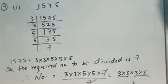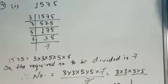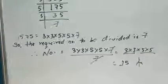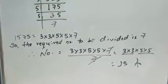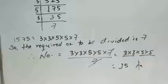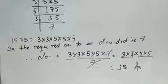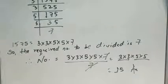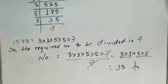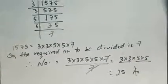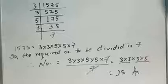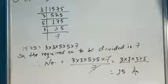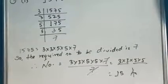कहा जा रहा है कि 1575 को किस number से divide करें कि यह perfect square हो जाए। Factorization करने पर value आएगा 3 × 3 × 5 × 5 × 7। 3 × 3 pair में है, 5 × 5 भी pair में है, but 7 unpaired है। So required number को 7 से divide करें तो perfect square मिल जाएगा। 7 से divide करने पर value आएगा 3 × 3 × 5 × 5, so 3 × 5 = 15। अगर 7 से divide करें तो यह 15 का perfect square हो जाएगा।